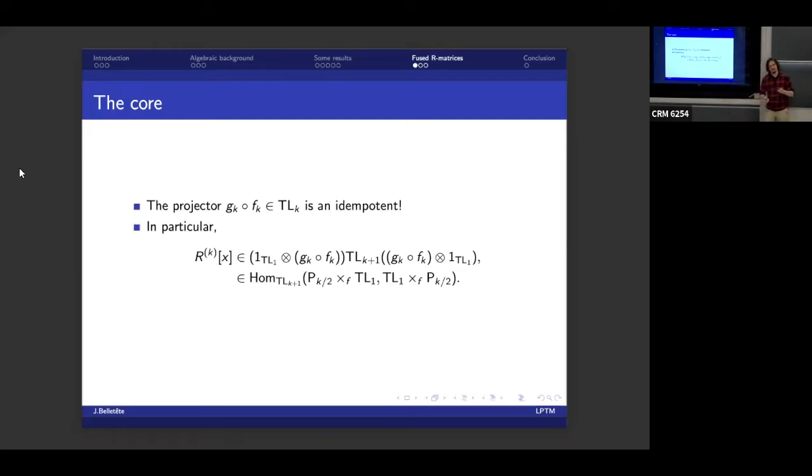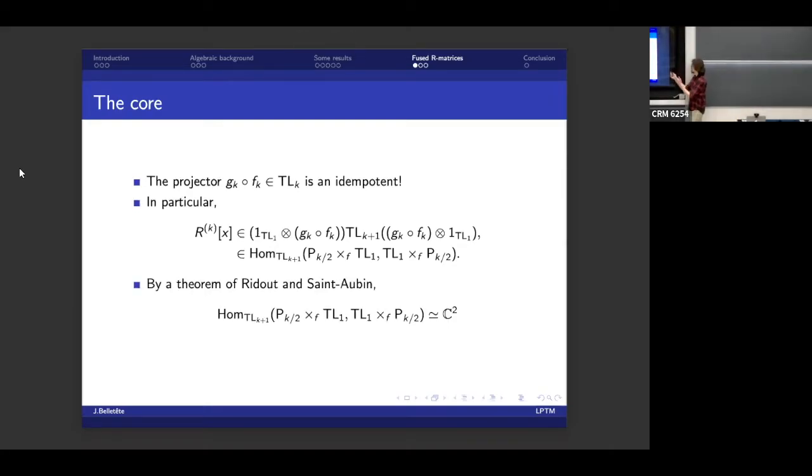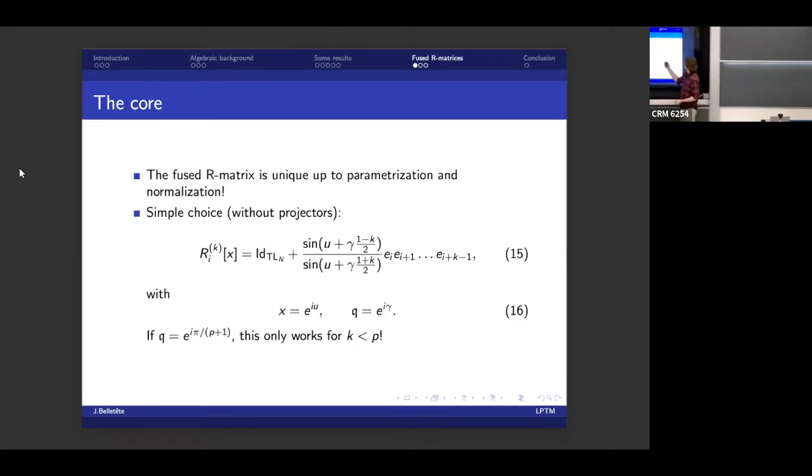But if you remember, I dropped you this fact from a course on algebra, that this space is really equivalent to this set of linear maps. And now, very helpfully, by a theorem of David Ridout and Yvan Saint-Aubin, we know that this space actually has dimension 2. So the set of matrices that are possible at all is only two of them. Now, helpfully enough, the only ones that are invertible are linear combinations of the two at the same time. So really, the fused R matrix is unique up to parameterization and normalization. So that's our two dimensions, the norm, and then the spectral parameter X.